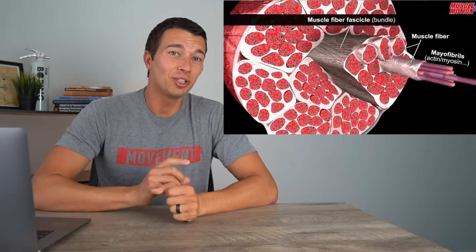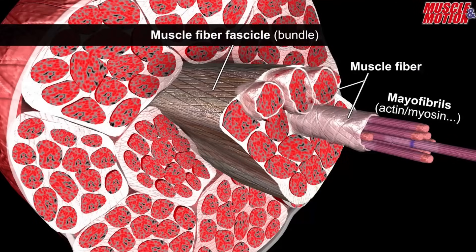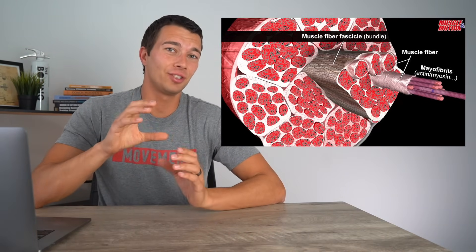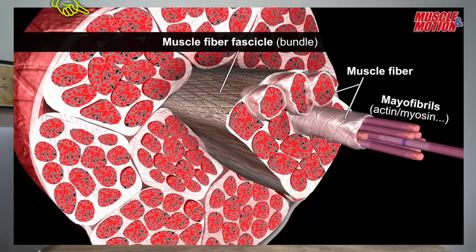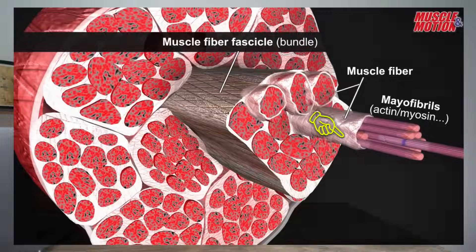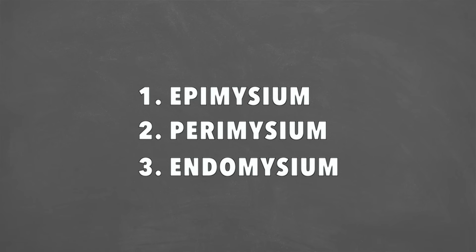To start off, we need to understand the structure of a muscle before we can understand the function of a muscle. This picture is a really good breakdown of how the muscle layers work. The important thing to know here is the different layers of connective tissue or muscle fascia. The outermost layer around the entire muscle is the epimycium. Going down a layer, surrounding one group of muscle fibers or a fascicle would be perimycium. And then at the smallest level is endomycium, surrounding one individual muscle fiber. Remember: epimycium is the biggest, then perimycium, then endomycium.